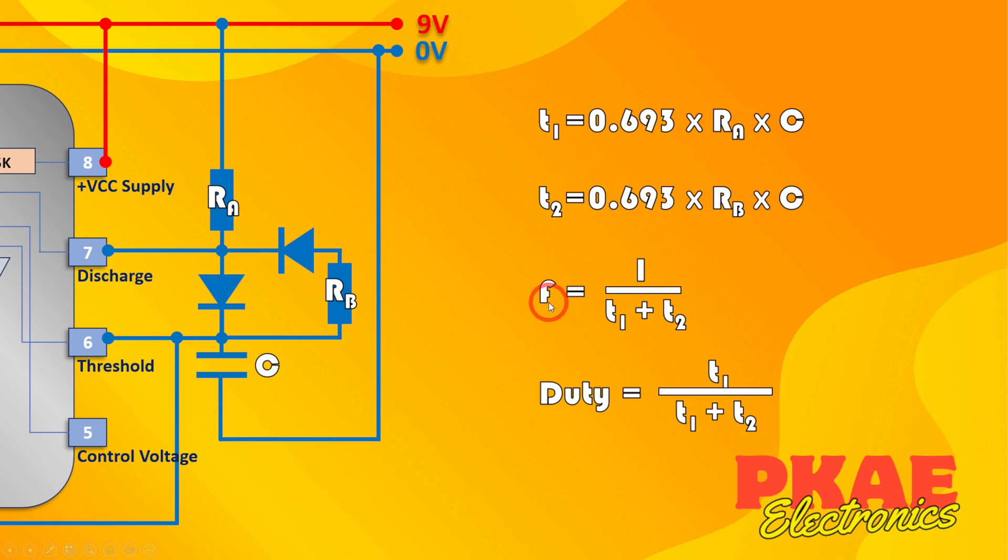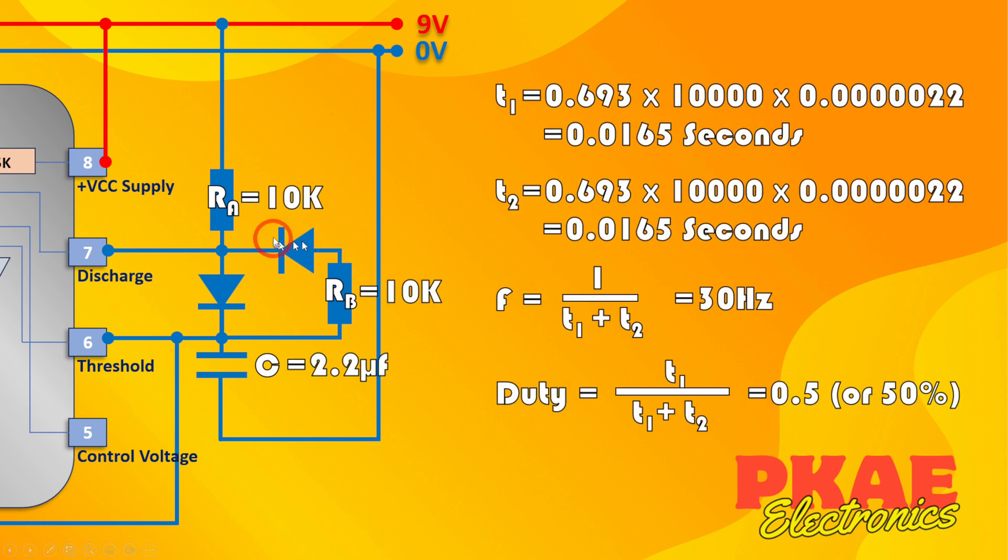Then your frequency as before is one over T1 plus T2, and your duty cycle is the on time over the time of the entire cycle. If we took as an example, made both of these 10K and keep our 2.2 microfarad capacitor as before, then our on time equates to 0.0165 seconds and our off time is the same. So therefore we have a 50% duty cycle and we expect the frequency to be around 30 hertz. So let's have a quick look at this on the breadboard and see what we get.